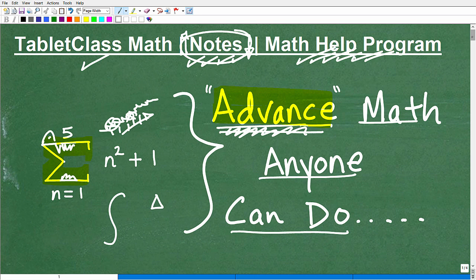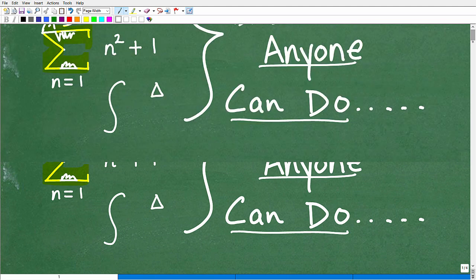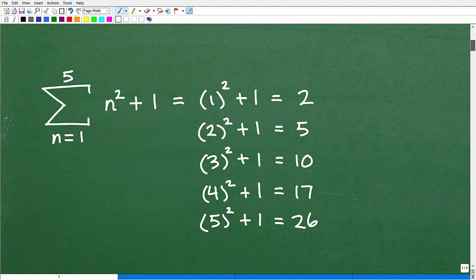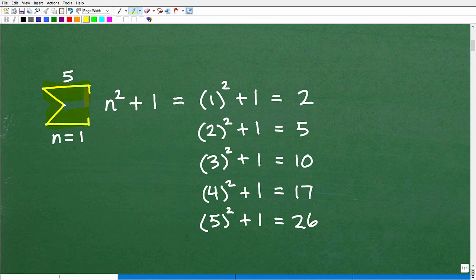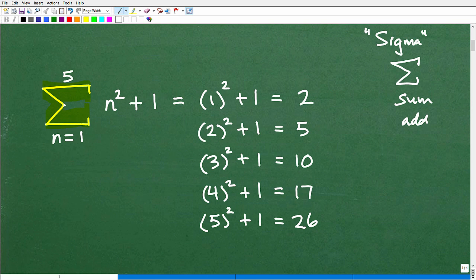Okay, let's get into this advanced math problem that anyone can do. All right, so here it is. This little thing here, this is what we call a sigma notation. Sigma, like this. It's a Greek alphabet type of deal. And this symbol, like this, basically means sum. It just means add up. That's all it means.